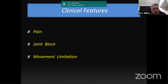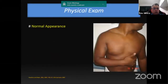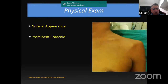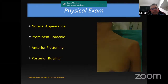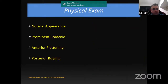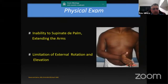Pain is an important feature to be observed; in chronic cases it can be mild. Joint block is frequent, and the doctor must be attentive in order to give a differential diagnosis, as it may look like frozen shoulder. During physical examination, the appearance of the shoulder may look normal. The coracoid process may be prominent with flattening of the anterior aspect of the shoulder and posterior prominence. Inability to supinate the palm when extending the arm, as described by Hawkins, is very frequently observed, and limited external rotation is important.